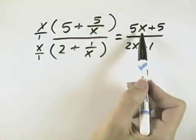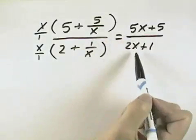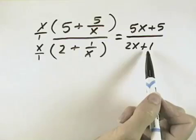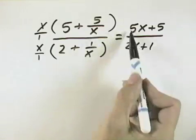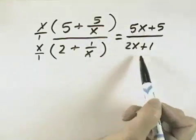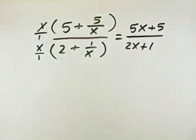We could factor the 5 out of the numerator, but it won't help us. We won't get the factor of 2x plus 1, so we cannot simplify this any further. So 5x plus 5 over 2x plus 1 would be the simplified form of our answer.